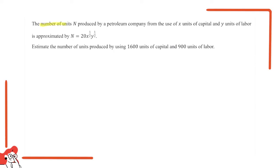The number of units n produced by a petroleum company from the use of x units of capital and y units of labour is approximated by this expression: n equals 20 times x to the power of 1/2 times y to the power of 1/2. Estimate the number of units produced by using 1600 units of capital and 900 units of labour.